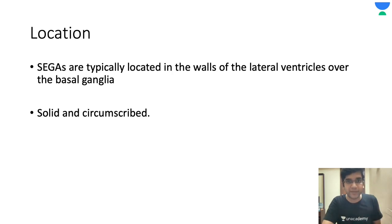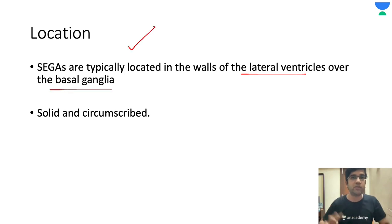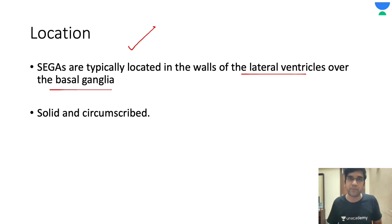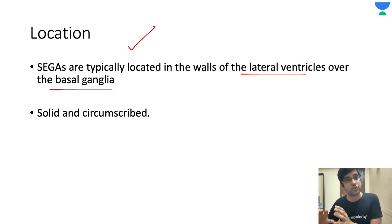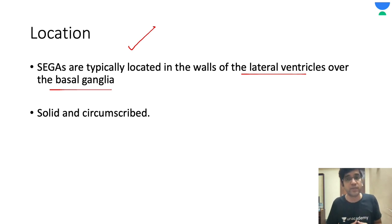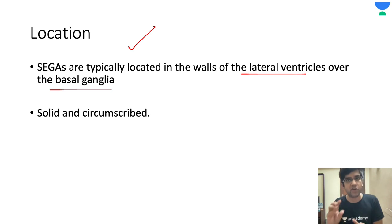Coming back to the location — as I said, it's going to be in the lateral wall of ventricles, generally over the basal ganglia. This location will be given by a radiologist, who will have T1 and T2 weighted images and give a preliminary diagnosis of SEGA. There is one way to differentiate: subependymal nodules is one finding, and subependymal giant cell astrocytoma is another. If your hospital has MR spectroscopy, by analyzing proteins like choline and acetyl esterase, they can say whether it's a neoplastic mass or just a nodule.